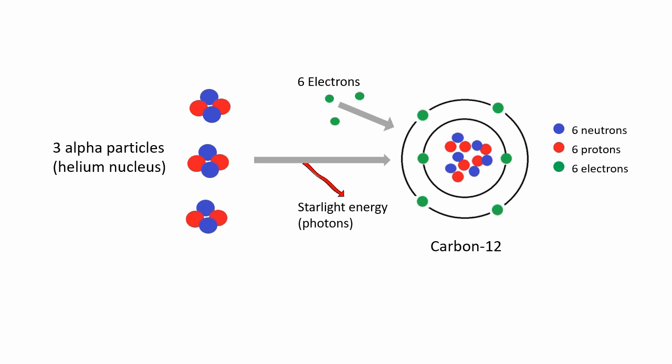Physicists call this recipe the triple alpha process. Makes sense since three alpha particles, six protons plus six neutrons, are fused to create one carbon-12 atom, plus some energy. This process happens in stars that are about ten times more massive than our sun.